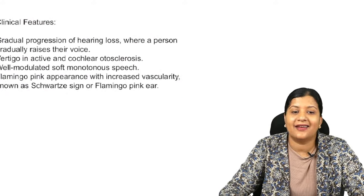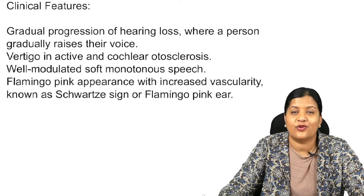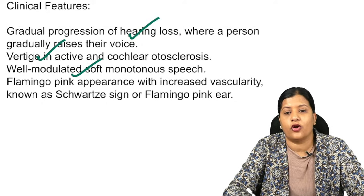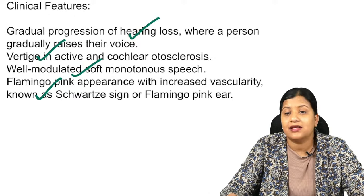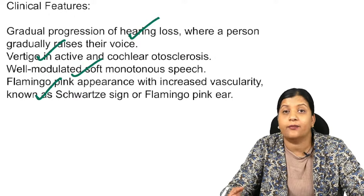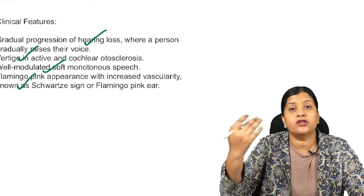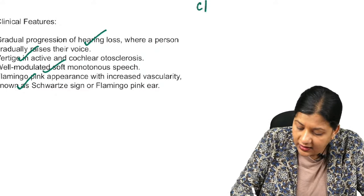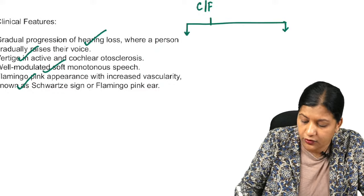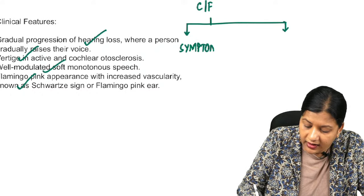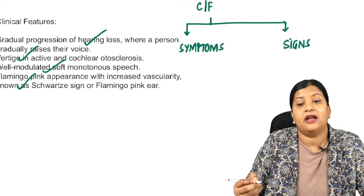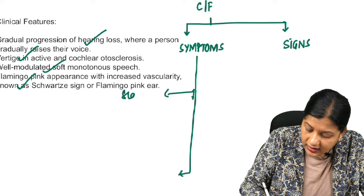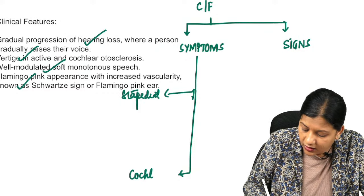For clinical features — two marks — rather than listing features randomly, divide them into two subheadings: symptoms and signs, and further classify under stapedial type and cochlear type. Under symptoms for stapedial type, you have gradually progressive conductive hearing loss, increased voice, and soft monotonous speech. For cochlear type, the symptom is sensorineural hearing loss, along with tinnitus and vertigo. This tabular, classified format tells the examiner you clearly know the difference between the two types.